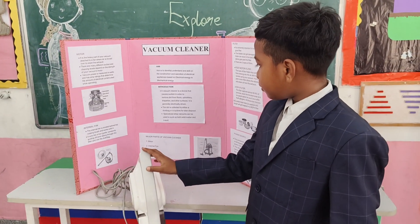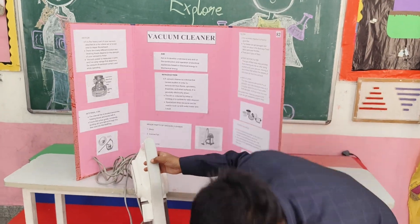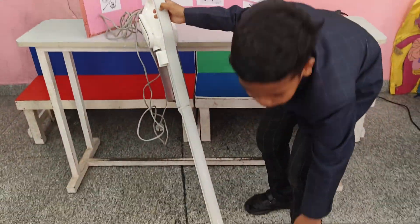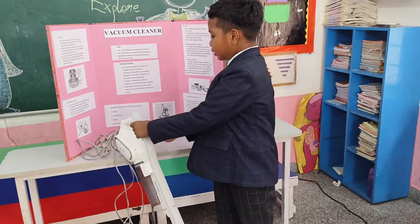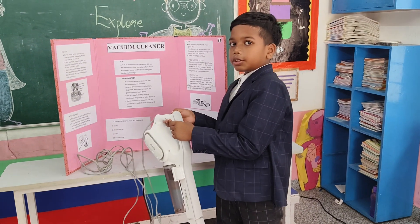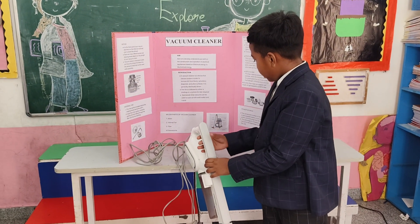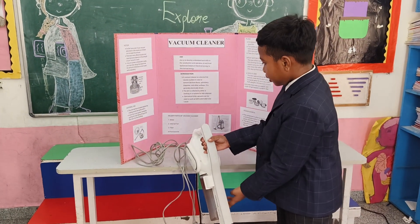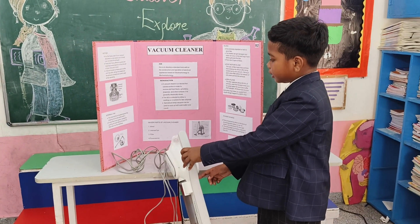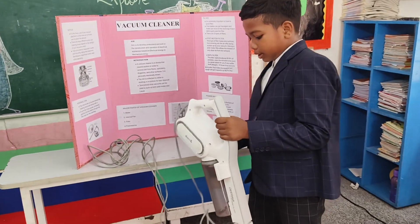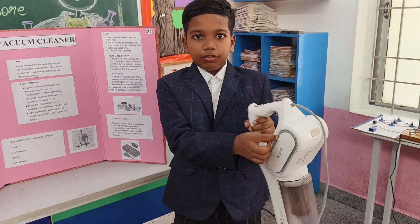This is a vacuum cleaner. This is called a floor brush, and this is called the waterproof container. And this is the middle cover, and here is the water inside it. And this is the filter.